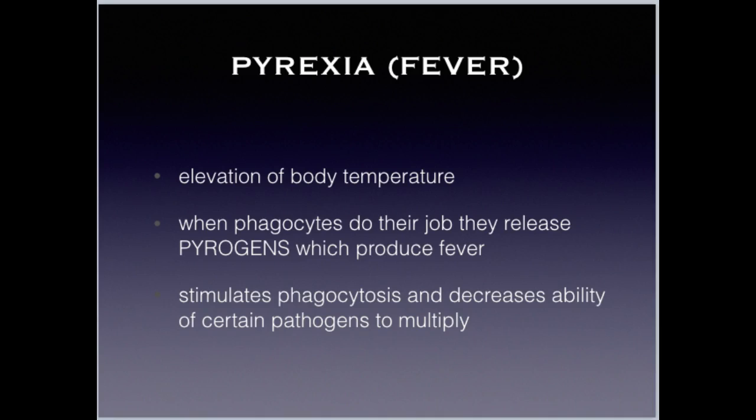Pyrexia, or fever, is an abnormal elevation in body temperature. As phagocytes perform their duty, they release fever-producing substances called pyrogens — that is the Latin word for fire. The hypothalamus, which we'll talk about in Essential Body, is the control center for the body's temperature. Pyrogens stimulate phagocytosis and decrease the ability of certain pathogens to multiply, so we want some degree of fever, especially when pathogens don't survive higher temperatures — we just don't want it to be too high.